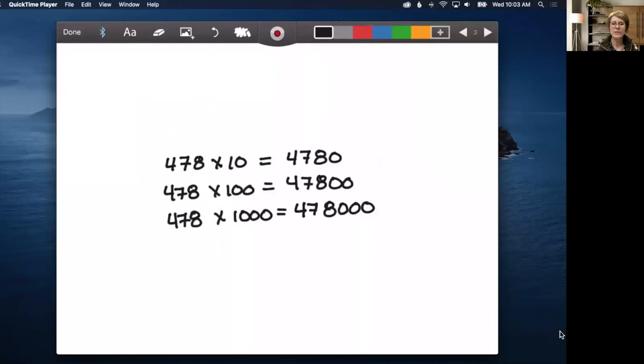So maybe show the students these problems and let them have conversations. And you will probably get students that say, all I have to do is add the same number of zeros to the problem as what I'm multiplying by. So if it's 10, I add one zero. If it's 100, I add two. If it's 1,000, I add three.